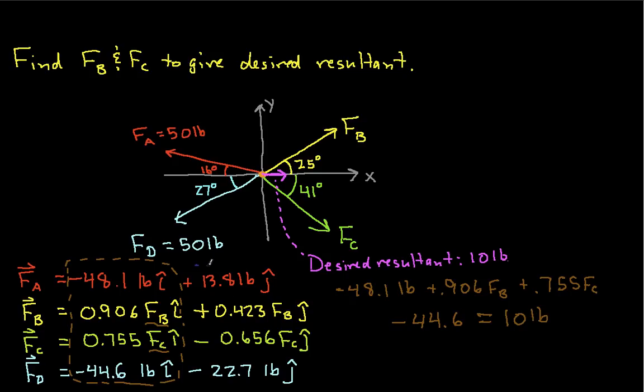Okay, in the y direction, we have all of these values and we'll sum them up. We want them to be 0. So, we have 13.8 pounds plus 0.423 Fb minus 0.656 Fc minus 22.7 pounds and this is equal to 0 pounds. Okay, so we have our two equations and our two unknowns. Again, our unknowns are Fb and Fc. So, let's solve these two equations.